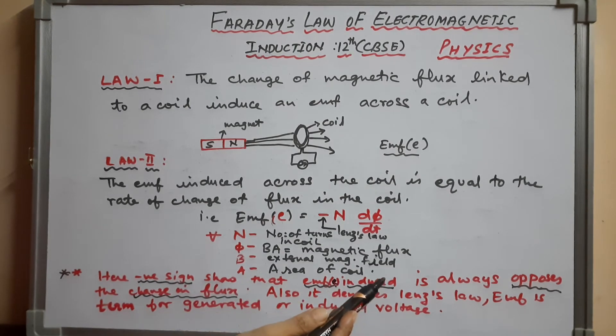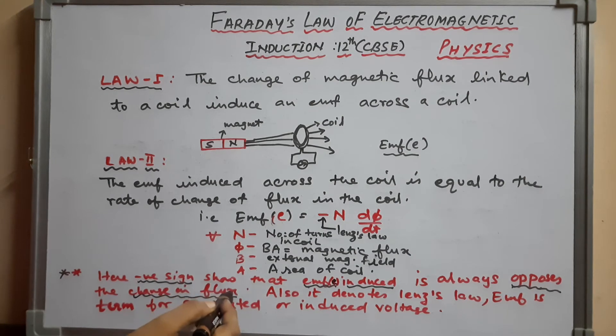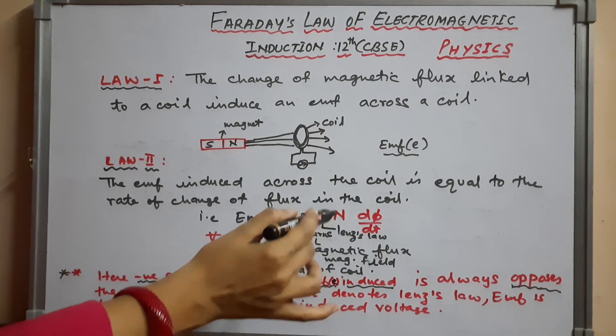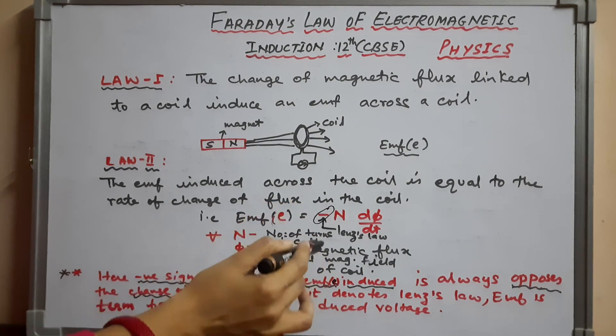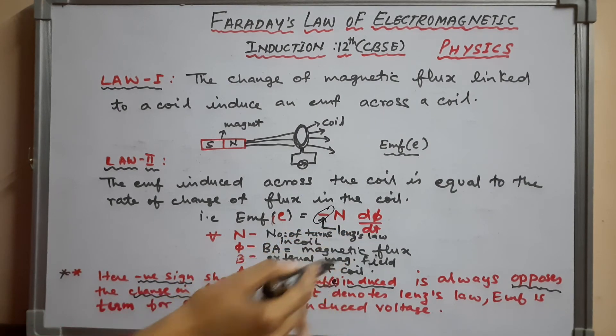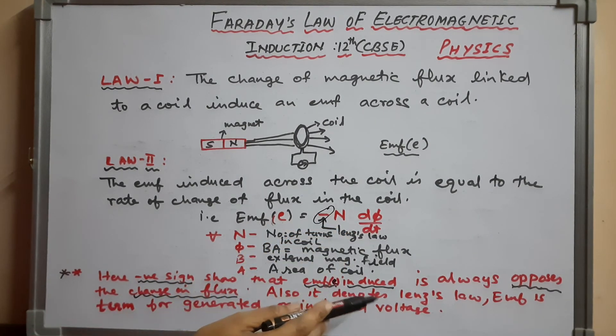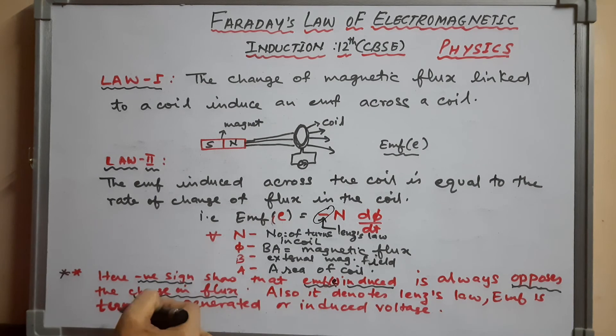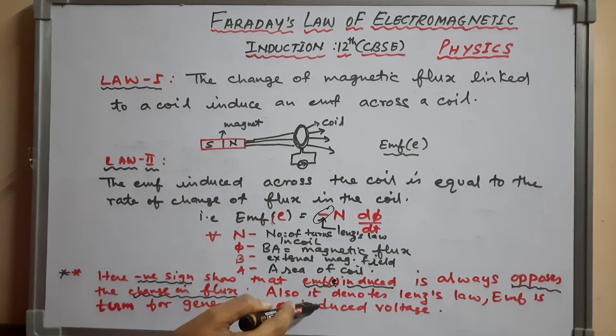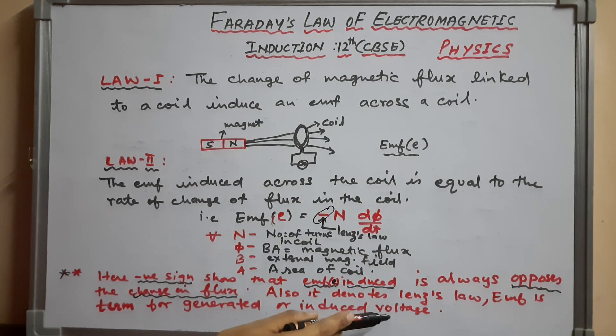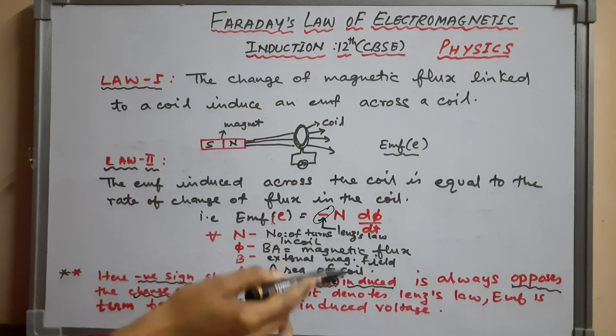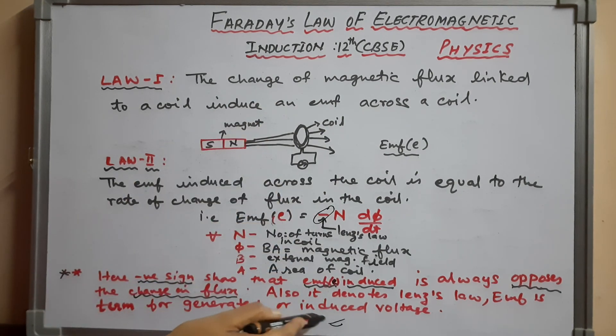The negative sign indicates that induced EMF always opposes the change in flux—this minus denotes Lenz's law. Also, EMF is the term for generated or induced voltage. This is called Faraday's law.